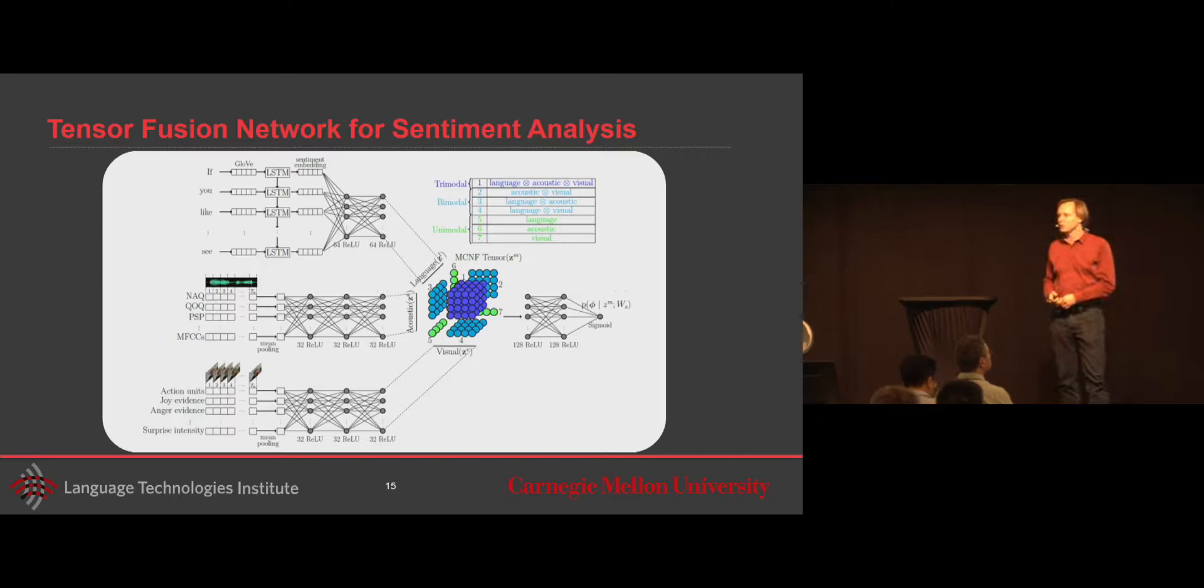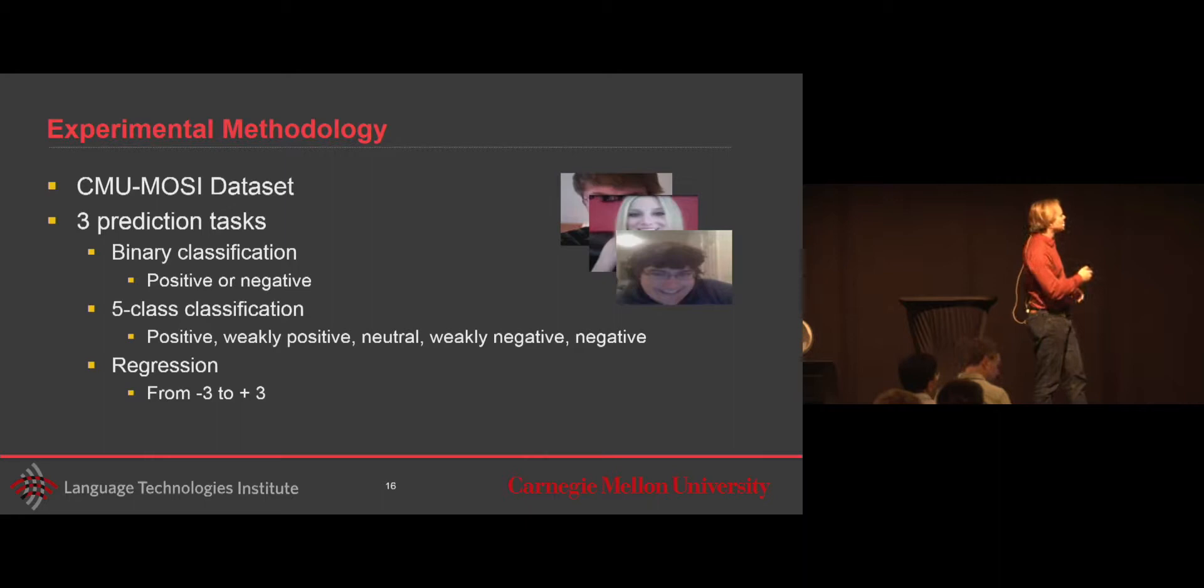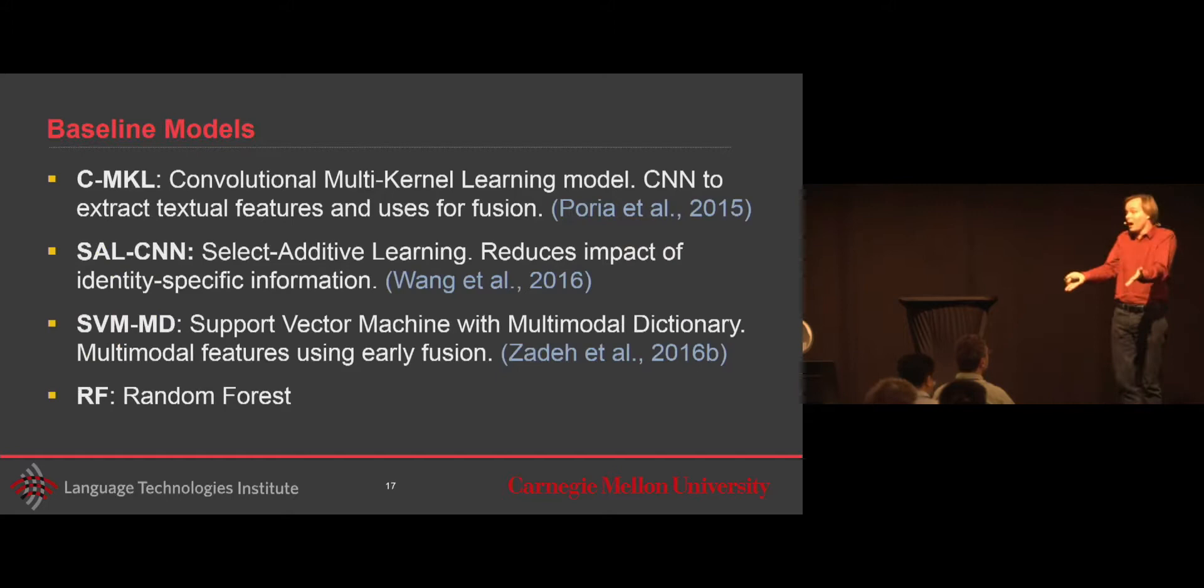So our experiment, we did, as I mentioned, on the CMU data set. And we followed a lot of the protocol from previous work in sentiment analysis, one of the landmark papers by Richard Socher, where we have positive and negative. We have five classes. So it's a simple resampling of the seven classes to five classes. And then we also have the regression. In all of these, the only change is the loss function. Everything else is exactly the same. The only change is the loss function.